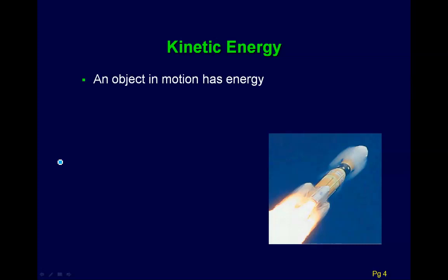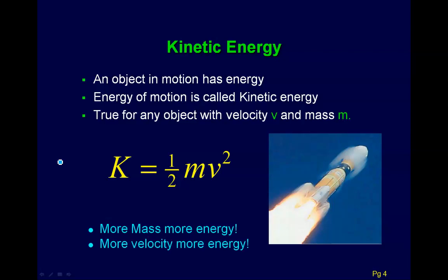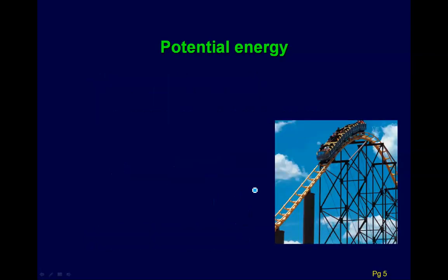The first definition is kinetic energy. Any object in motion has kinetic energy — any object with velocity and mass has kinetic energy — and it's one-half mv squared. We use K for kinetic. More mass, more energy. More velocity, more energy. The units: mass is in kilograms, and velocity squared is meters squared over seconds squared. This combination is defined as the joule, and it will be the unit for all of our energy quantities.